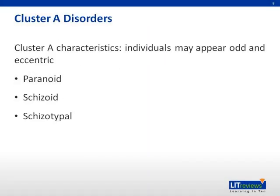Cluster A disorders include the following types: paranoid, schizoid, and schizotypal. This is a categorical approach; however, an individual diagnosed with a personality disorder may have an additional personality disorder from a different cluster. Now I will discuss each type in more detail.